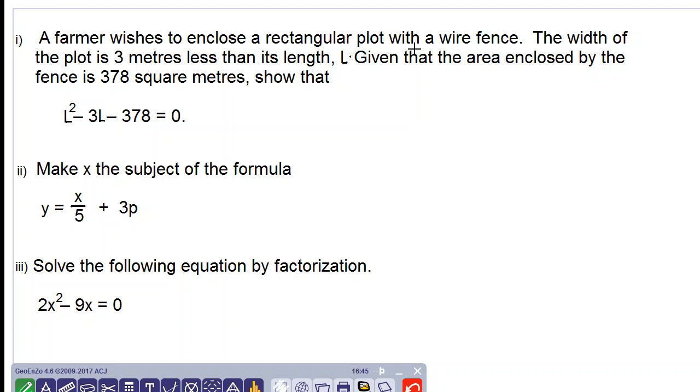A farmer wishes to enclose a rectangular plot with a wire fence. The width of the plot is 3 meters less than its length L. Given that the area enclosed by the fence is 378 square meters, show that L squared subtract 3L subtract 378 equal to 0.